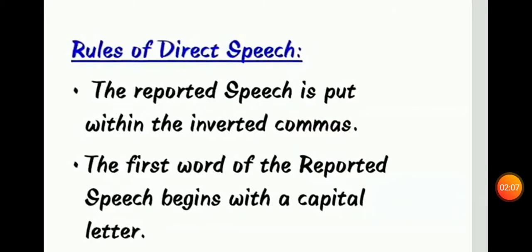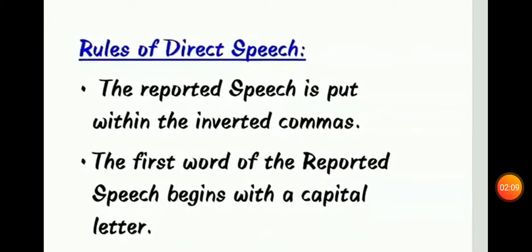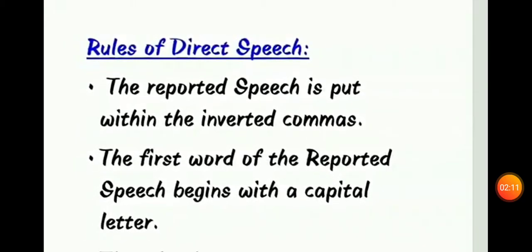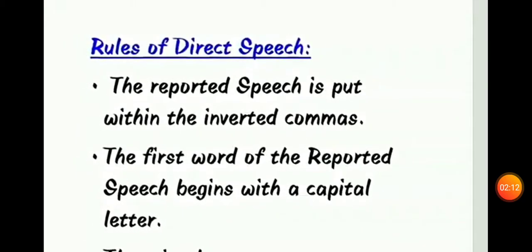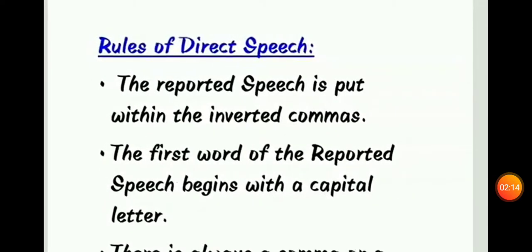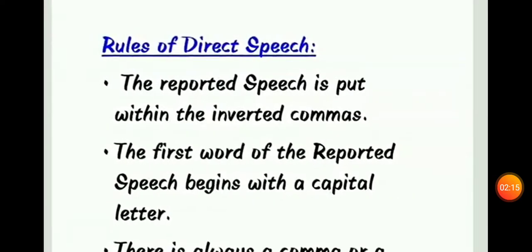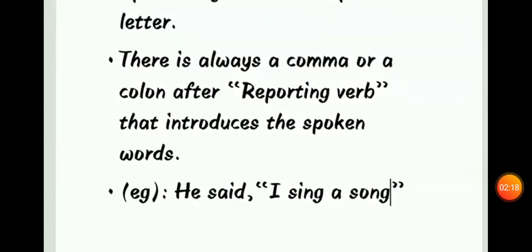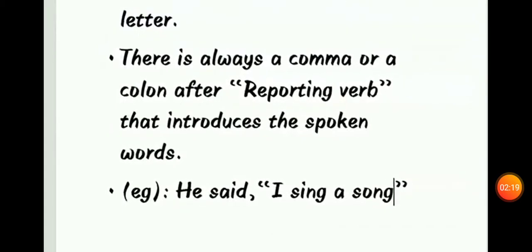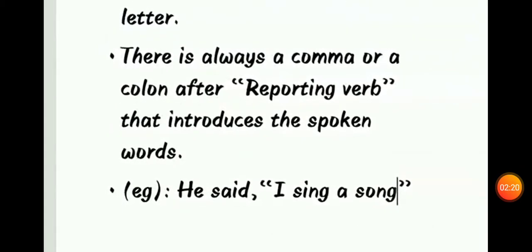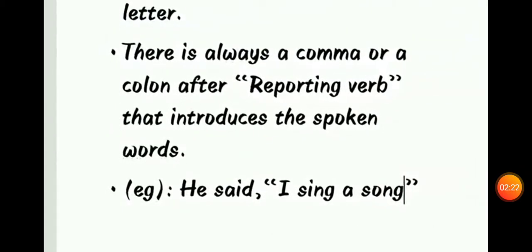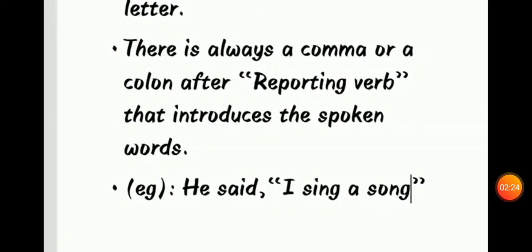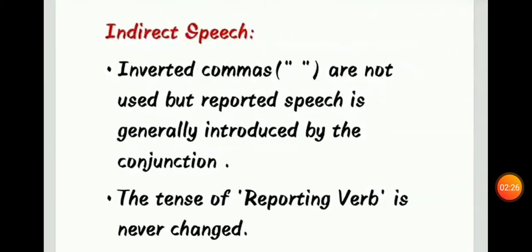Rules of direct speech: First, the reported speech is put within inverted commas. Second, the first word of the reported speech begins with a capital letter. Third, there is always a comma or a colon after the reporting verb that introduces the spoken words. For example, he said, 'I sing a song.'